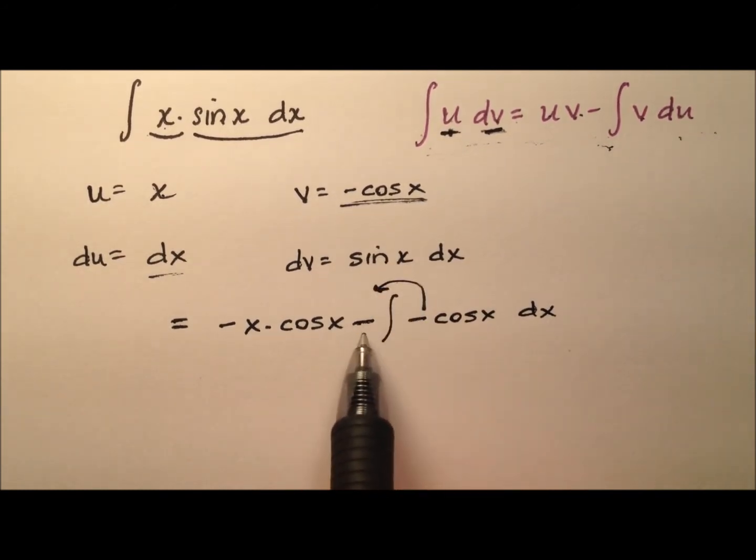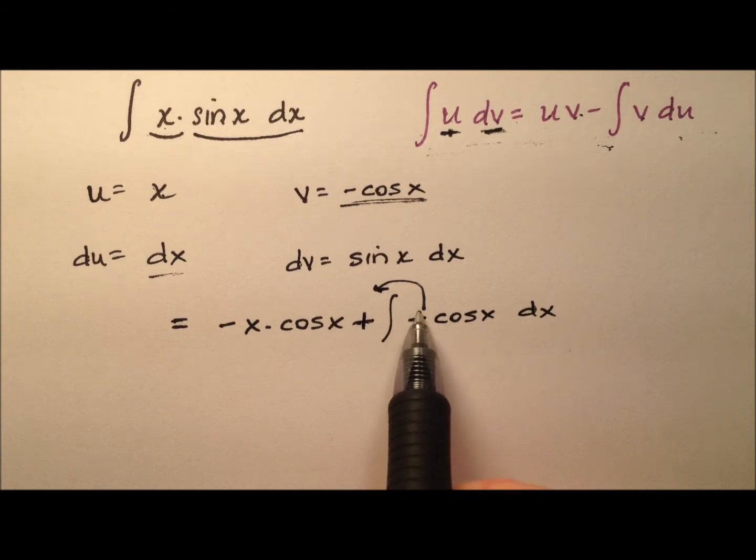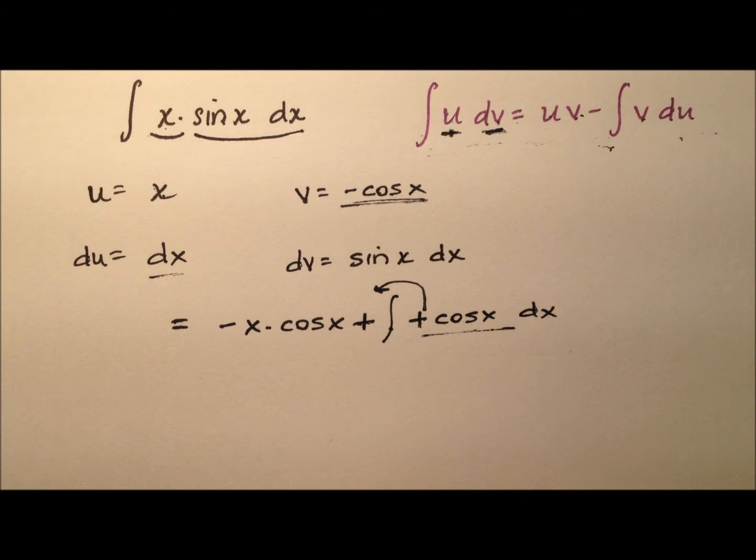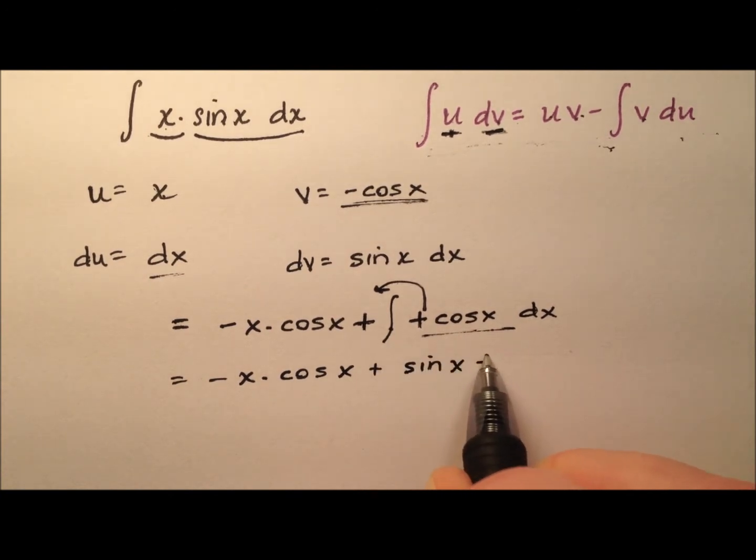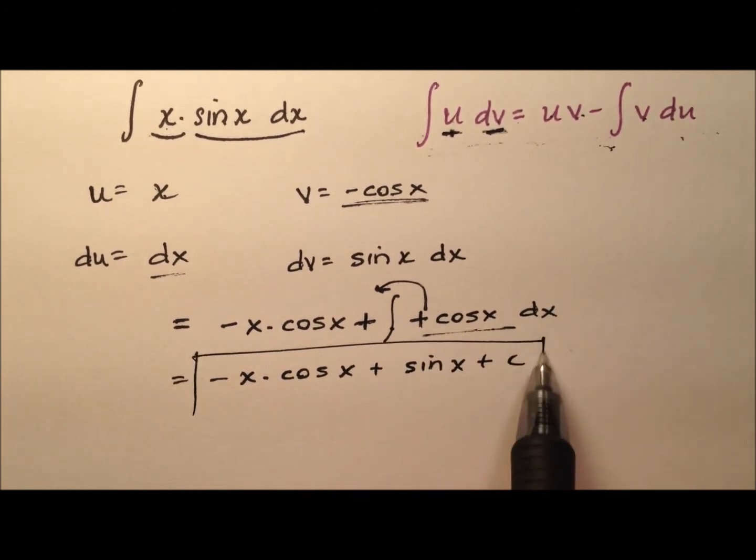The negatives here we could bring that out and we could have them cancel make positives so we're looking then for the integral of cosine x with respect to x and that's not bad at all because that's just going to be the positive sine of x and we'll put a plus c right there.